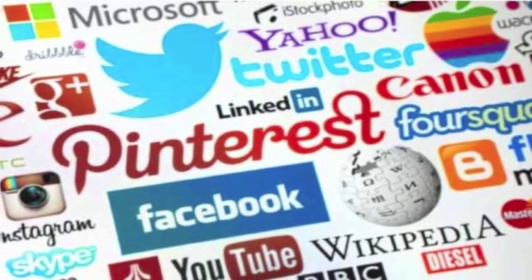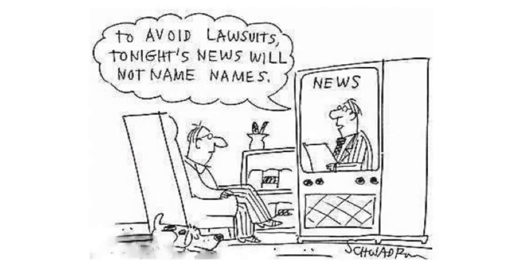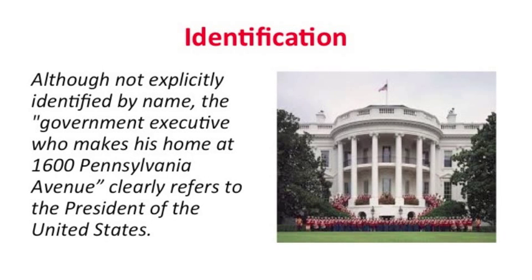In addition to showing that the statement was broadcasted or published, a person suing must also show that he or she has been individually identified. In many cases, this is pretty easy to determine — if a person is named, they will almost certainly meet the identification requirement. In other cases it's not so clear. If you do not explicitly name the person but provide enough specific details that there can be no confusion over whom you're referring to, the identification standard is met. So if you defame the government executive who makes his home at 1600 Pennsylvania Avenue, it is still reasonably identifiable as the President. If there is no identification, a person cannot successfully sue for defamation, even if he or she believes they are the one targeted by a false accusation.